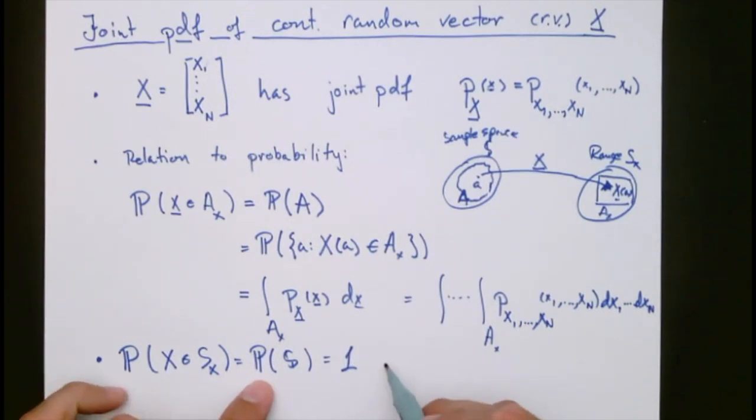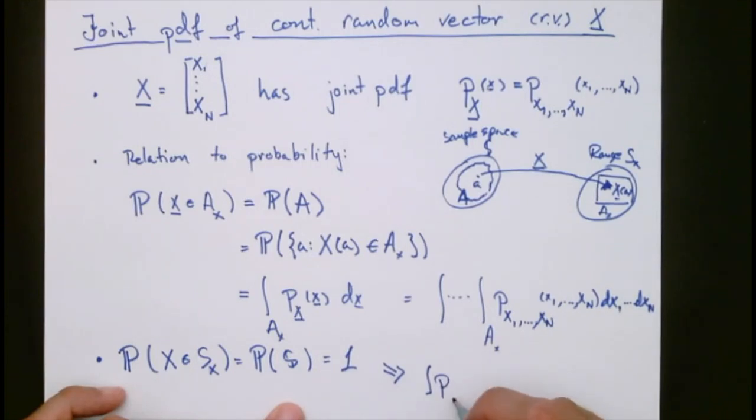And this in turn means that if we put in x here, we get 1. So the integral of the pdf throughout the whole space—we will just skip mentioning the sx, but we could write sx here to mean the whole range—but this integral here is always 1.